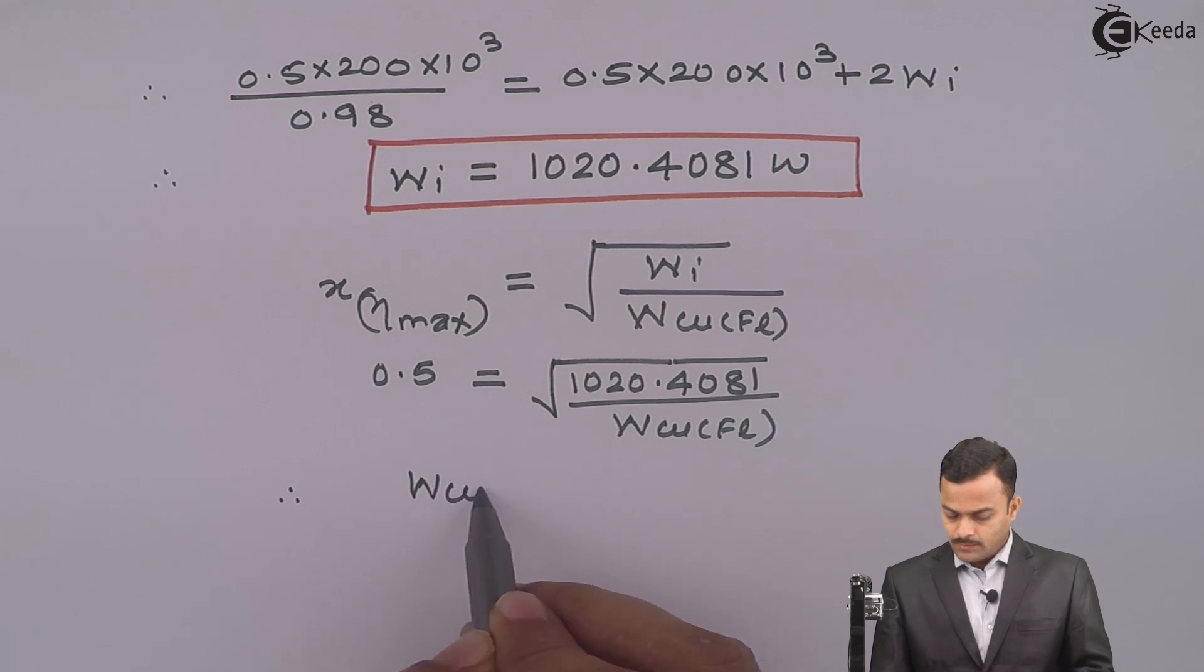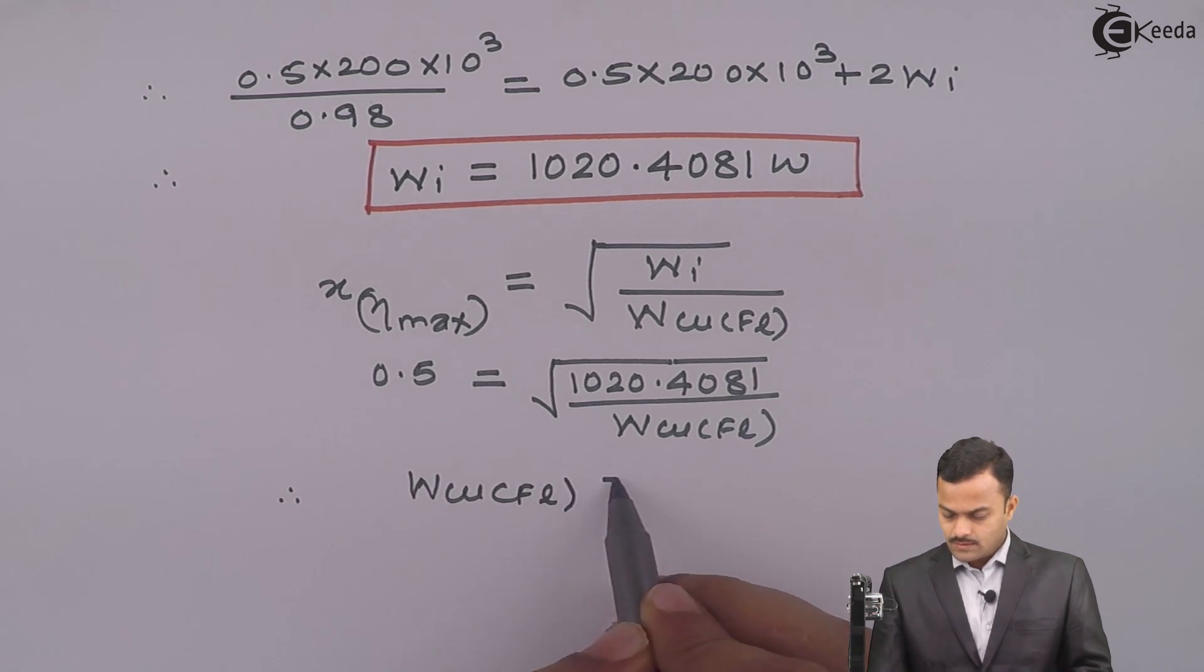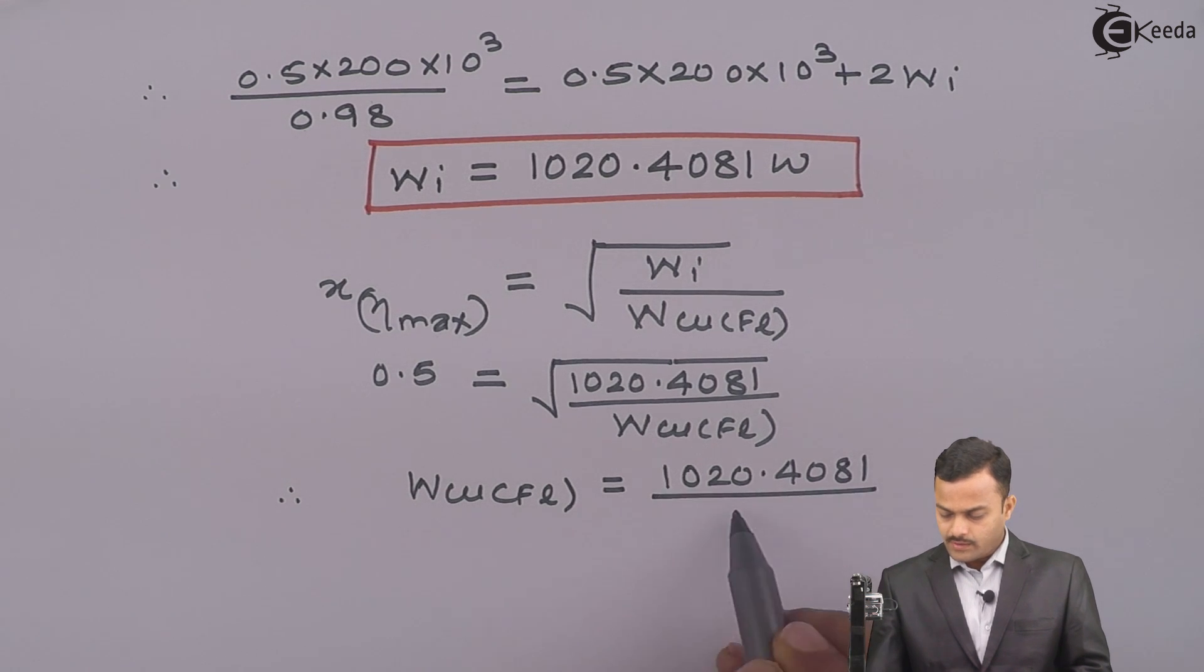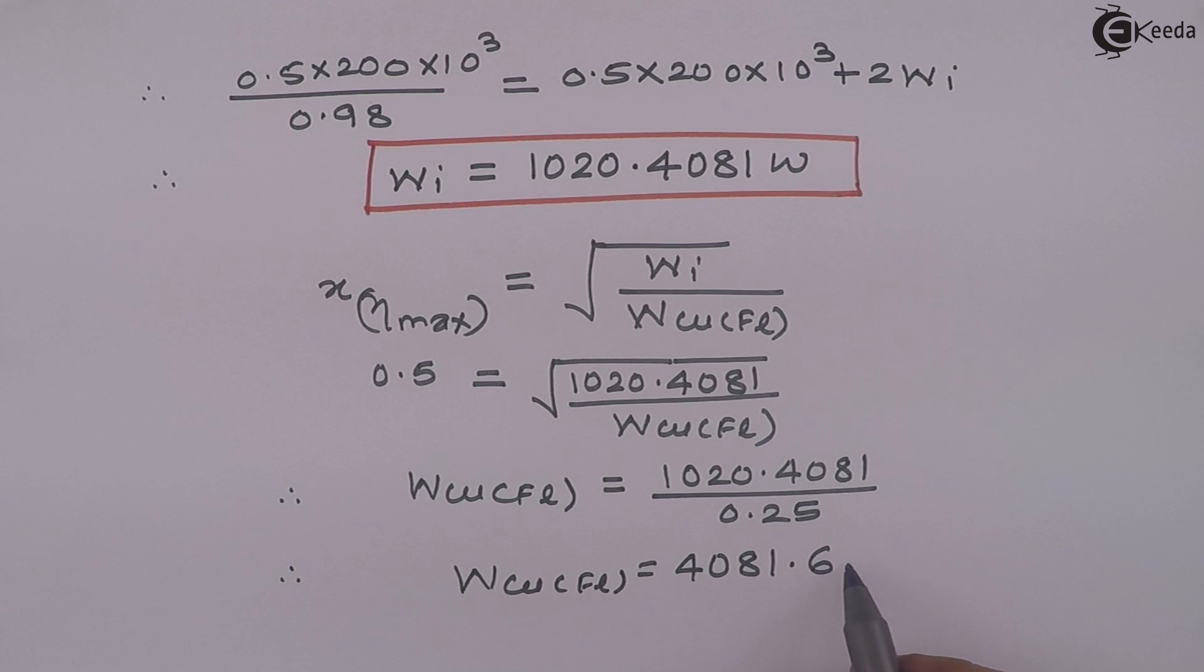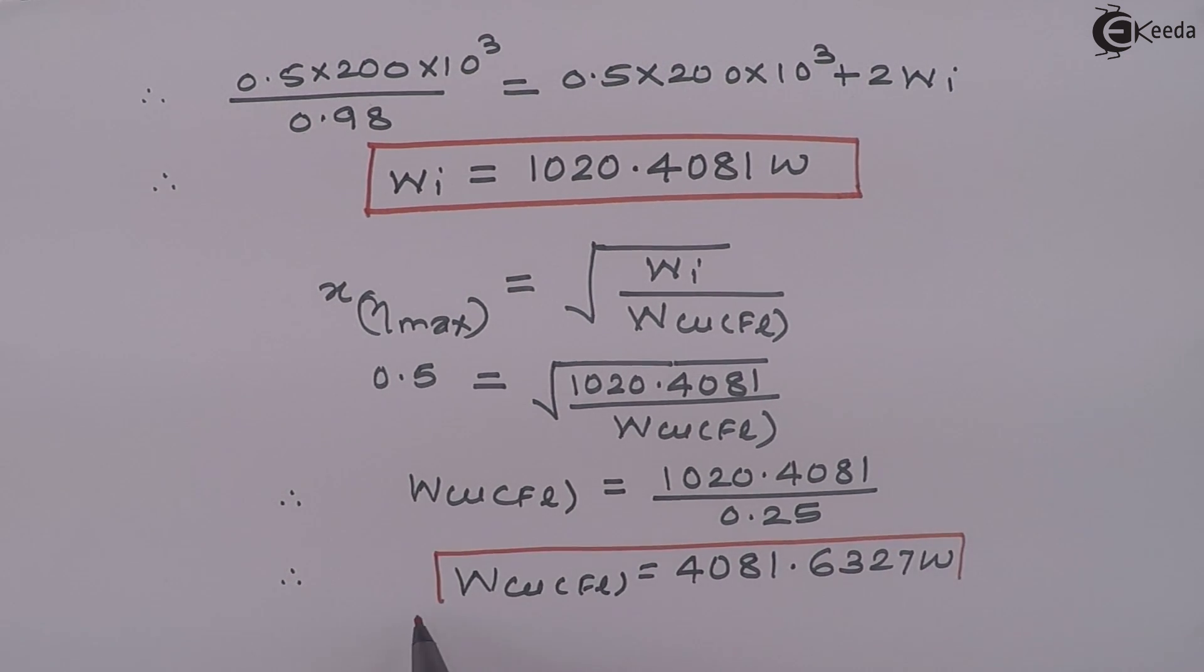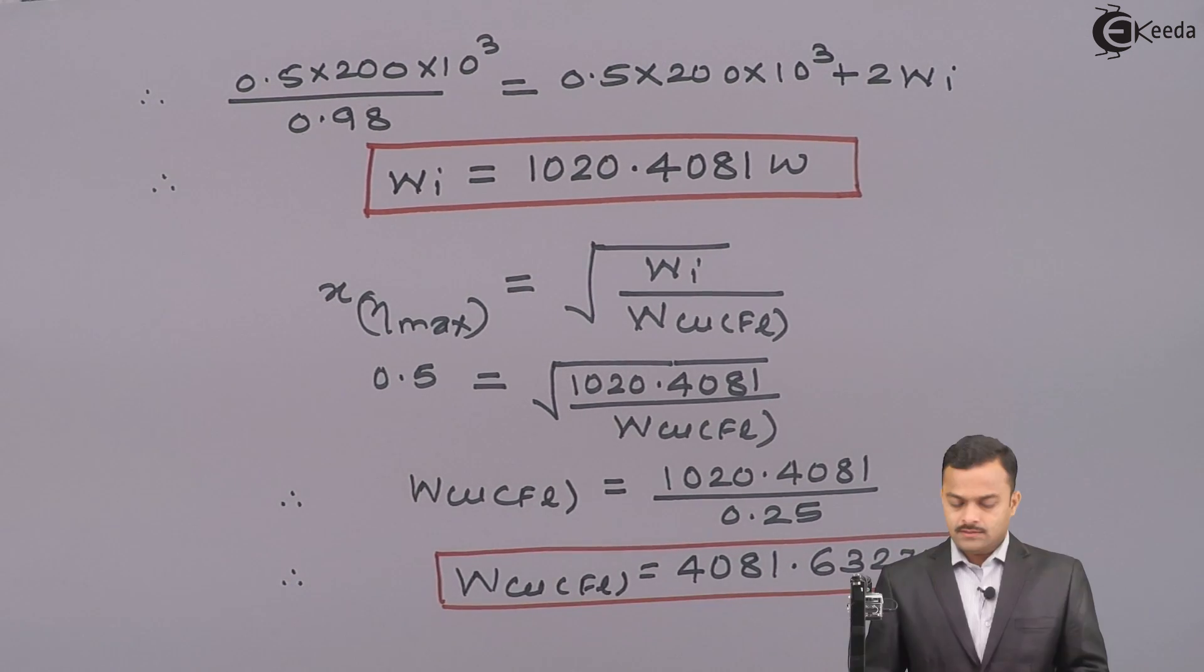So if you solve this, you will get WCUFL equal to 1020.4081 divided by 0.25. The answer you will get is 4081.6327 Watt. Full load copper loss we have calculated. This is very useful because we can get efficiency at any load.